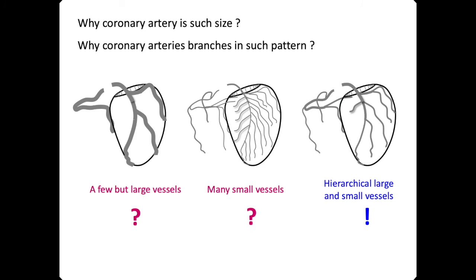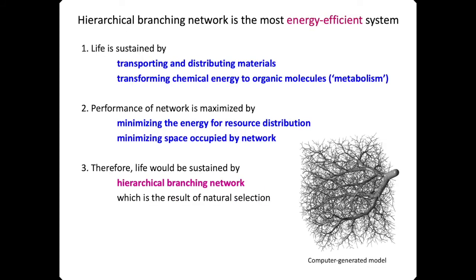Why does the coronary artery have such size and branch in such a pattern? Not a few large vessels, not many small vessels, but a hierarchical arrangement of large and small vessels. Because a hierarchical branch network is the most energy-efficient system — life is sustained by transporting and distributing materials, and the performance of the network is maximized by minimizing the energy and space of the network. Eventually, the human vascular system network follows the form of a hierarchical branch network.